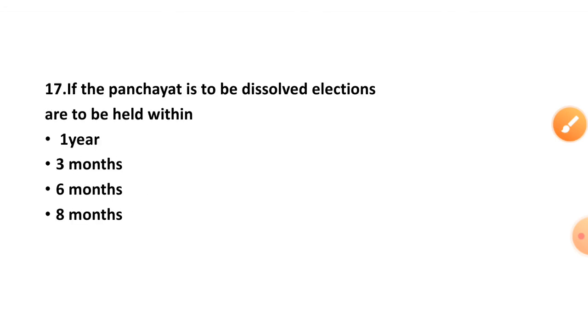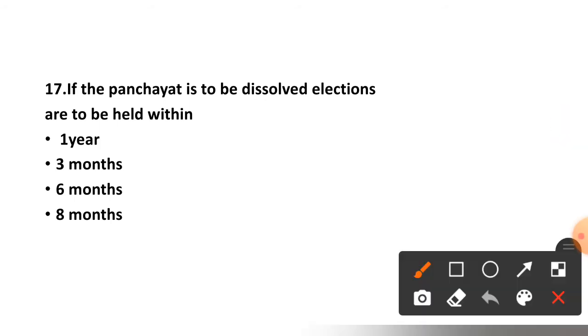Question number seventeen: If the Panchayat is to be dissolved, elections are to be held within — 1 year, 3 months, 6 months, or 8 months? The correct option is option C — 6 months.